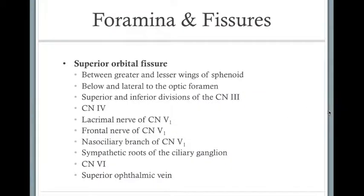Two other important fissures: the superior orbital fissure and the inferior orbital fissure. The superior orbital fissure is located between the greater and the lesser wing of the sphenoid, below and lateral to the optic foramen. The structures passing through it are the superior and inferior divisions of cranial nerve 3, cranial nerve 4, the lacrimal, frontal, and nasociliary branches of V1, the sympathetic roots of the ciliary ganglion, cranial nerve 6, and the superior ophthalmic vein.